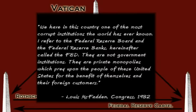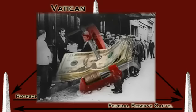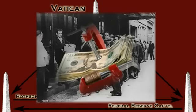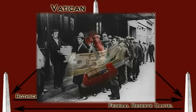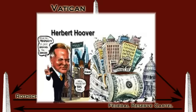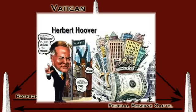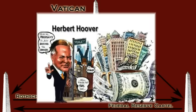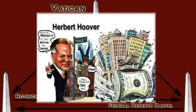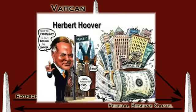We have in this country one of the most corrupt institutions the world has ever known — I refer to the Federal Reserve Board and the Federal Reserve Banks. They are not government institutions. They are private monopolies which prey upon the people of the United States for the benefit of themselves and their foreign customers. Instead of expanding the money supply, the Fed actually contracted the money supply, fueling the largest depression in U.S. history. Once again outraged, Louis McFadden brought about impeachment hearings against President Herbert Hoover and introduced a resolution bringing conspiracy charges against the Board of Governors of the Federal Reserve, saying that the crash of 1929 and the following depression was a carefully contrived occurrence.